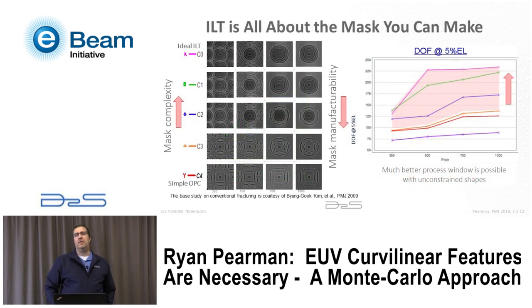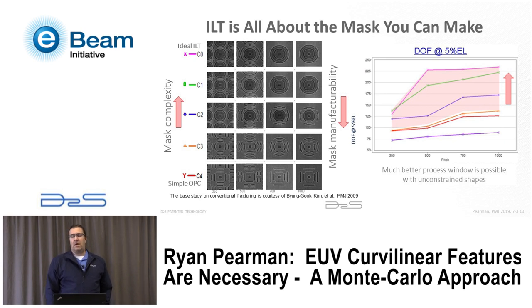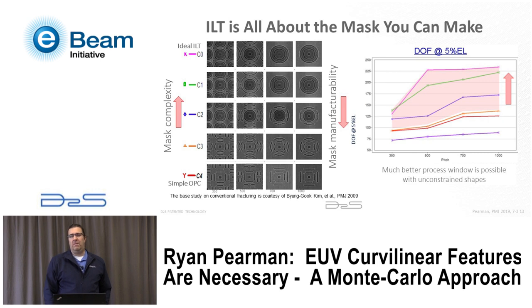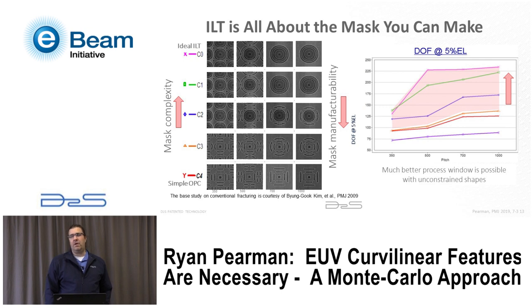This study was done about 10 years ago and presented at SPIE by BG Kim from Samsung along with Leo Pang from Luminescent. They looked at masks from ideal ILT with increasingly more restrictions until you got to something that looked like OPC. They showed that process window was basically a monotonic function of mask complexity — the more complex the mask, the more it looked like the ideal shape, the better the process window. People would settle on something like the second or third row, trading the least focus window loss for a capable write time.